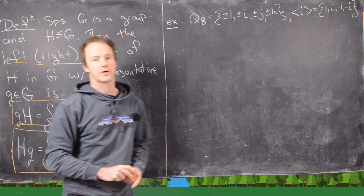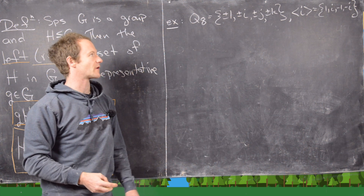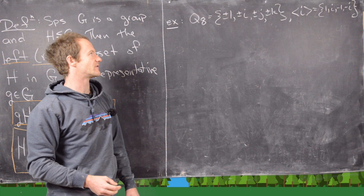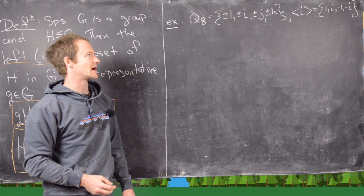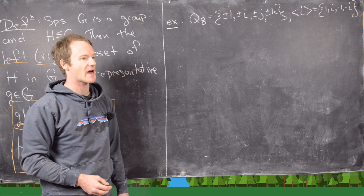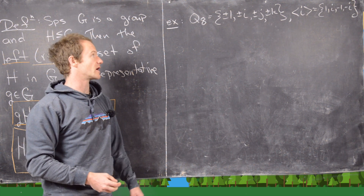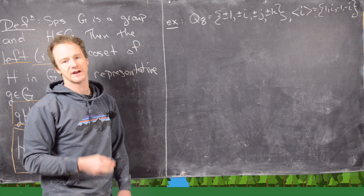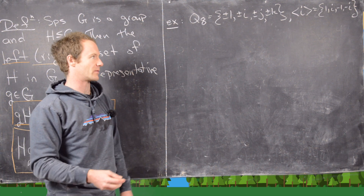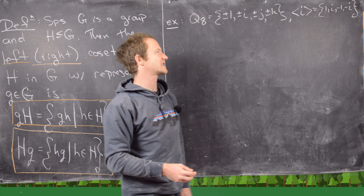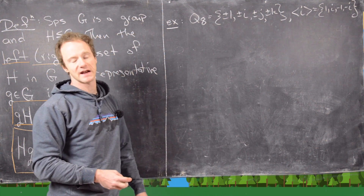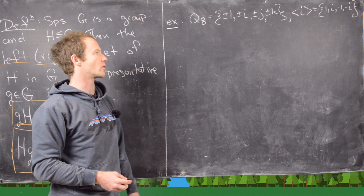For our next example, the group is the quaternions, a non-abelian group of order 8 with elements ±1, ±i, ±j, ±k. Recall i²=j²=k²=-1 and i·j=k, along with other properties — there's a separate video on quaternions if you need to review. We take the cyclic subgroup generated by i, which gives us {1, i, -1, -i}, a group of order 4.